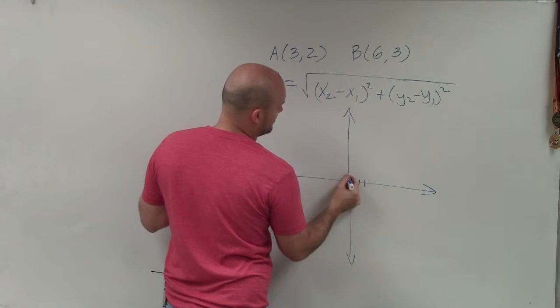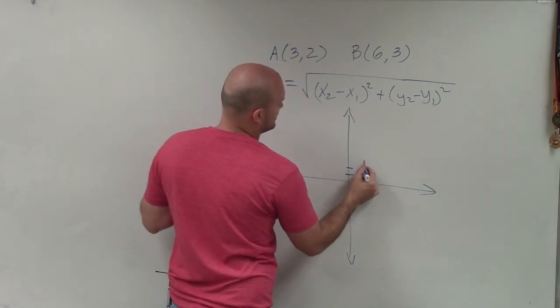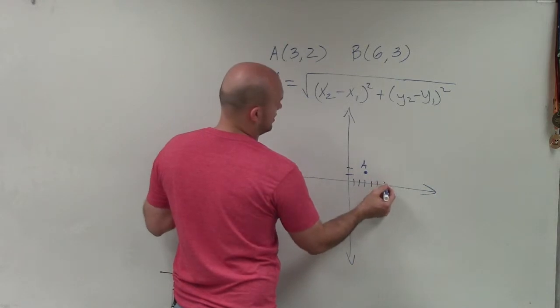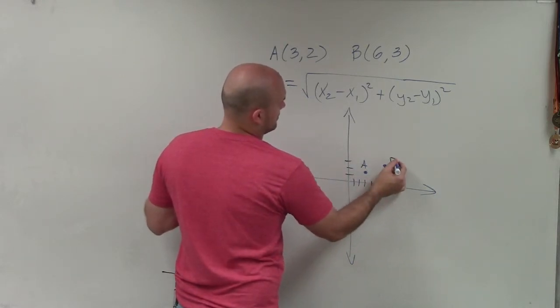So I'll plot this point: 1, 2, 3, 1, 2, that's point A. And then B is 1, 2, 3, 4, 5, 6, up 3, that's B.